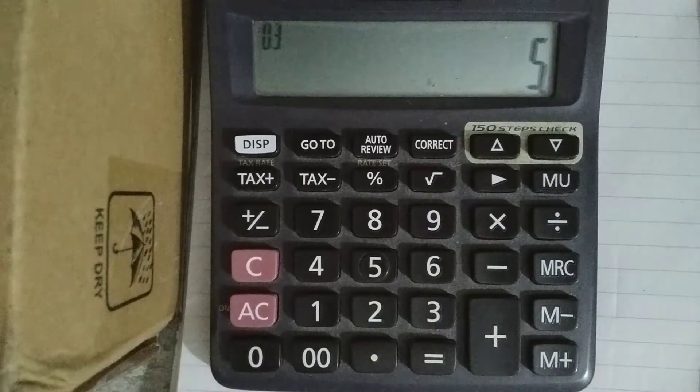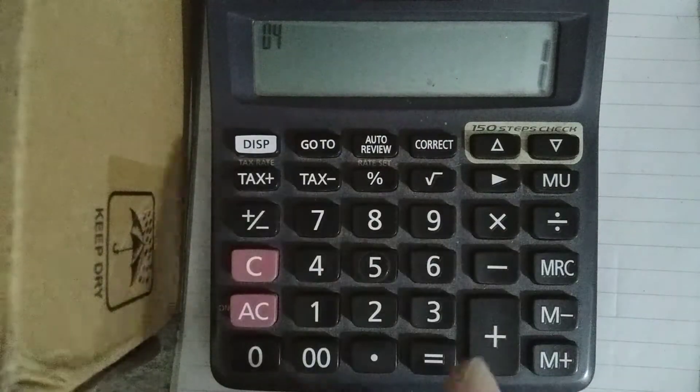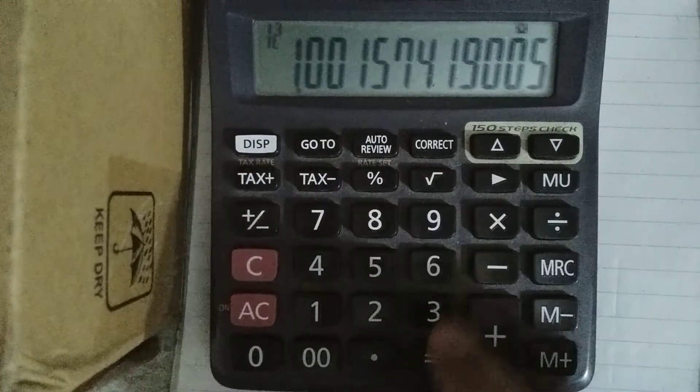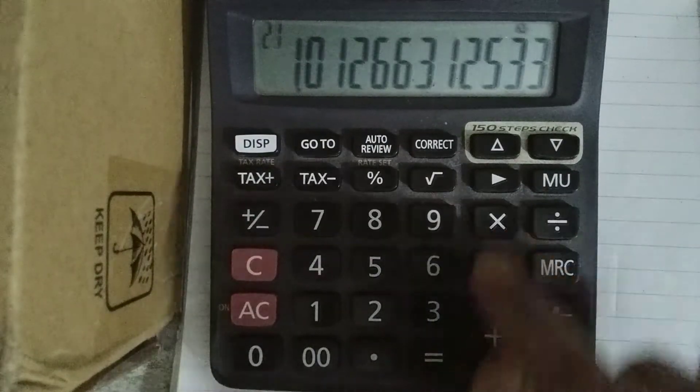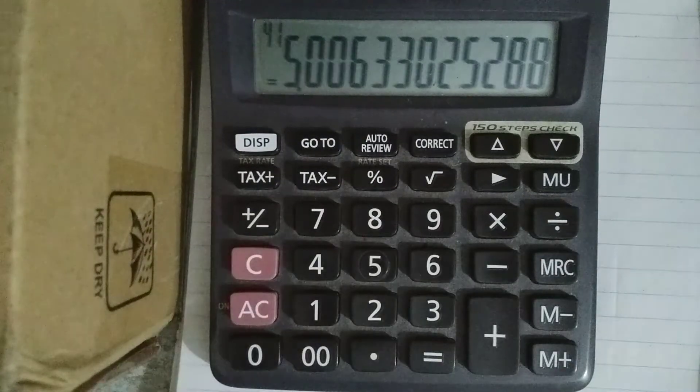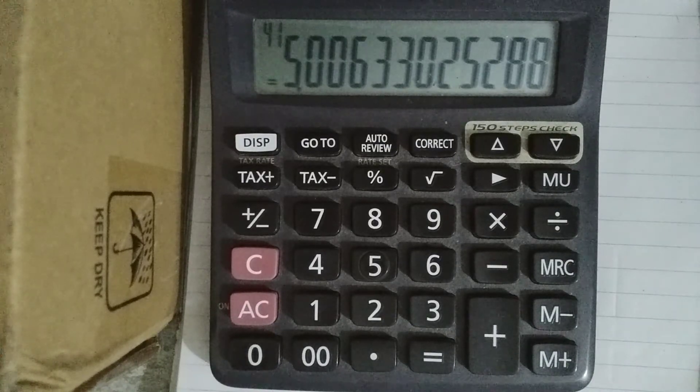Whatever root you want, divide by that number, then plus 1, and press equal 12 times: 1, 2, 3, 4, 5, 6, 7, 8, 9, 10, 11, 12. And the answer comes out to 5. So this is how you can calculate the fifth root of 3125.